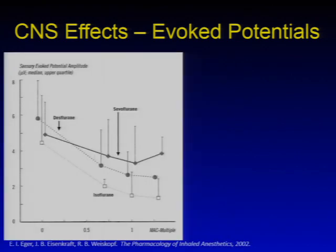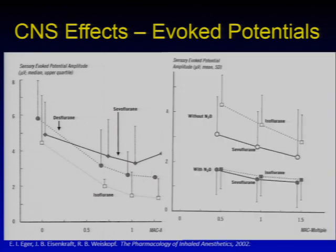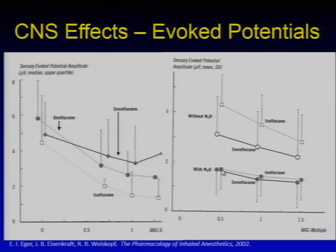Inhalational agents will affect evoked potentials, which is a big deal for neuro cases. In general, the agents decrease the amplitude of evoked potentials — as we increase MAC, we see a drop in evoked potential amplitude. When nitrous is added, amplitude starts off quite a bit lower but stays a little flatter as MAC increases, whereas without nitrous it declines fairly precipitously. If the value with nitrous still gives you evoked potentials sufficient for monitoring, it may not be a problem to have nitrous going. But if you need higher amplitude evoked potentials, nitrous would be something to avoid.